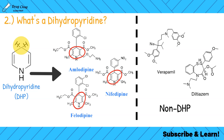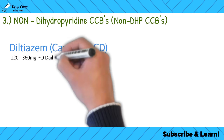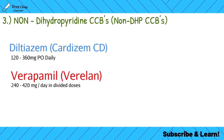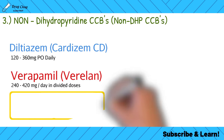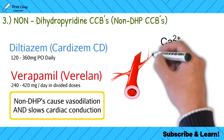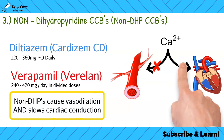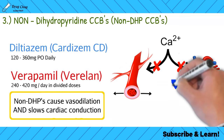The non-DHP calcium channel blockers include diltiazem (brand name Cardizem) and verapamil (brand name Verelan). What makes them different is that they can both vasodilate our arteries and affect our heart rate. Non-DHPs do two things: they relax blood vessels and lower heart rate, by blocking calcium channels in both the arteries and the heart.